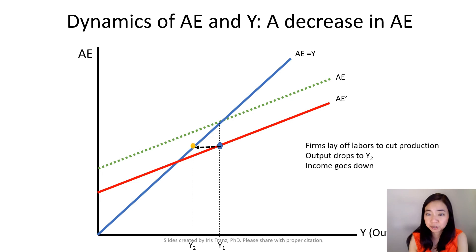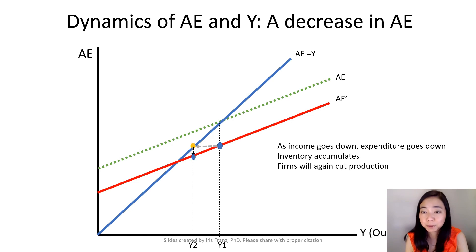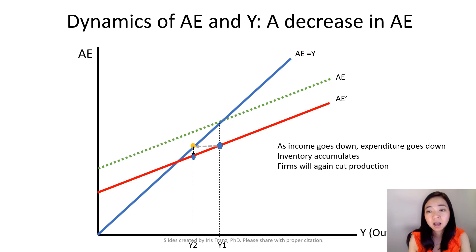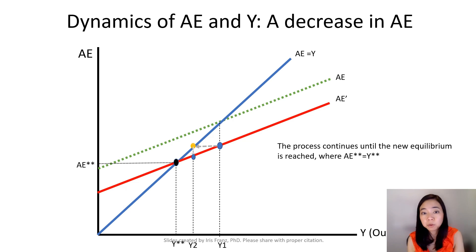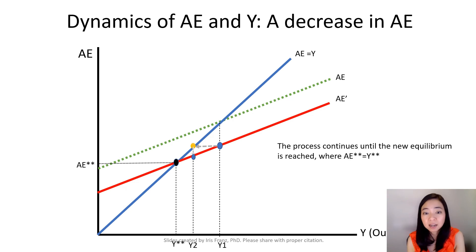And as a result, these workers' income goes down. Now because these workers were laid off with a smaller income, they will cut their consumption. As a result, aggregate expenditure is going to go down. So we're going down from this yellow point to this blue dot. This adjustment is going to continue until we hit the new equilibrium — the black dot — where aggregate expenditure AE** is exactly equal to our new output Y**.